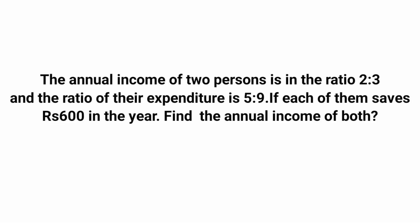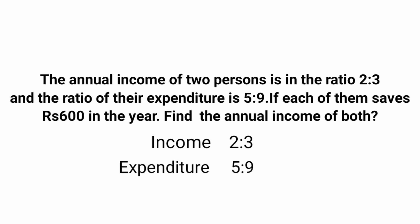First question: the annual income of two persons is in the ratio 2:3 and the ratio of their expenditure is 5:9. If each one of them saves rupees 600 in the year, find the annual income of both. In the question, the annual income ratio is 2:3 and their expenditure ratio is 5:9.